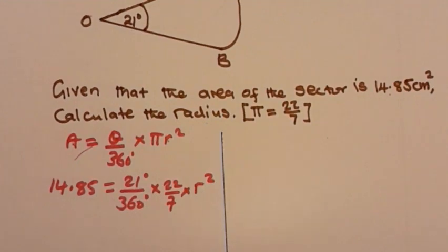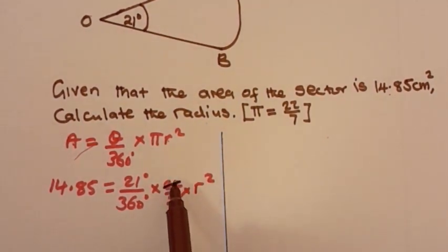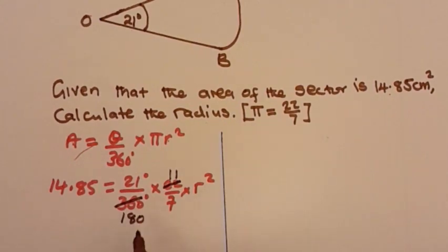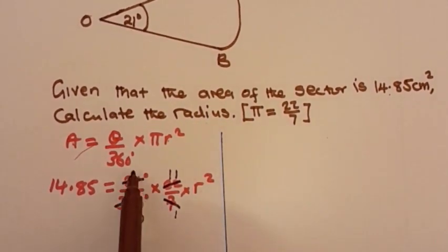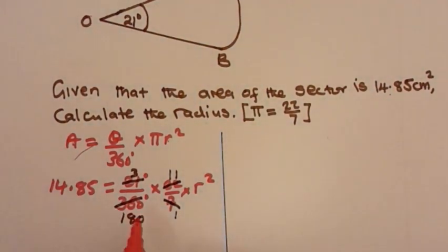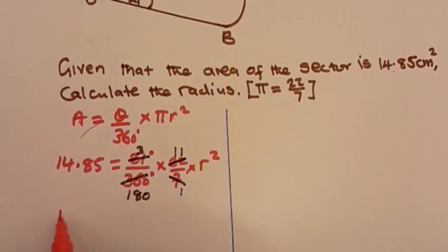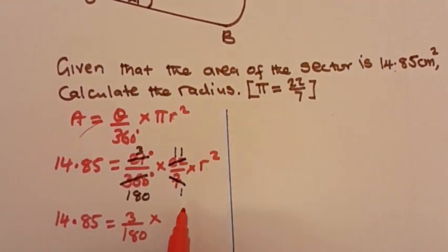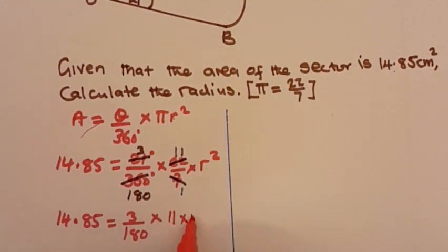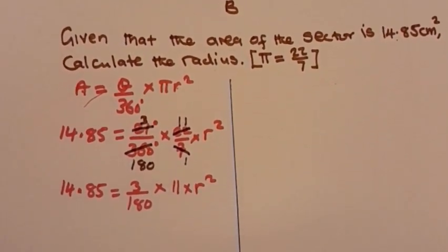From here we can simplify. 2 goes into 22 eleven times and 2 goes into 360 one hundred and eighty times. Then 7 goes into 21 three times and 7 into 7 is 1. So we are remaining with 14.85 is equal to 3 over 180, times 11, times r squared.